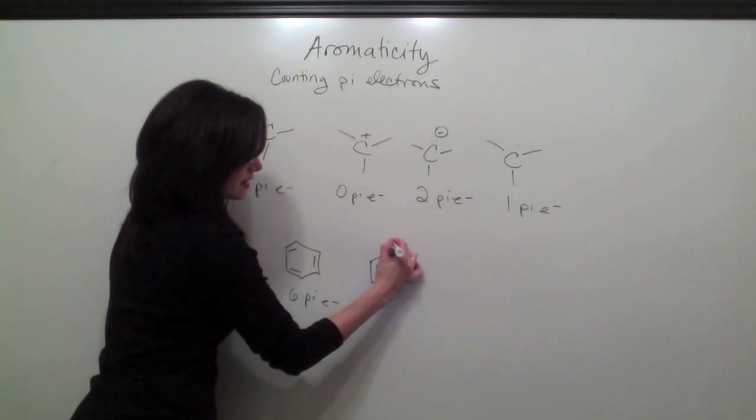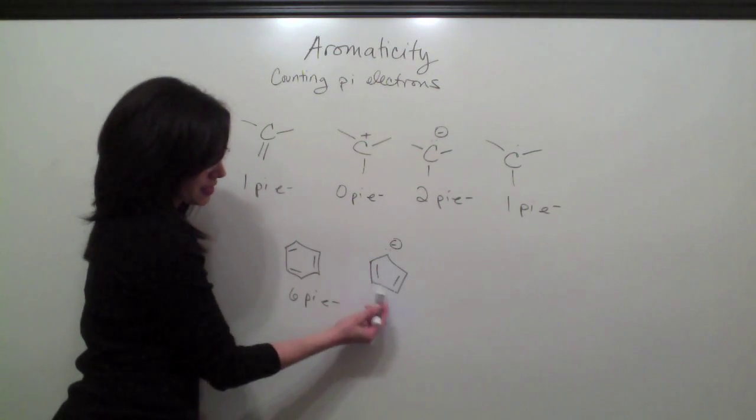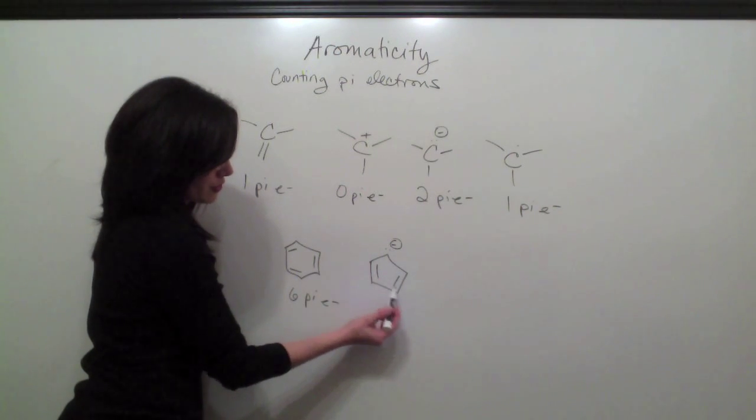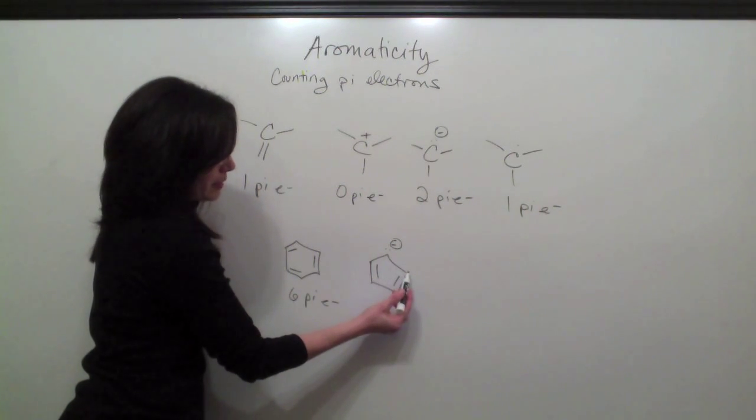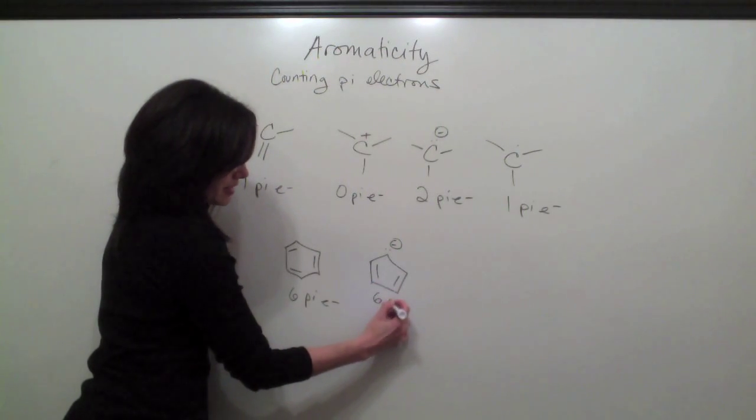Take a look at this guy. These are all sp2. That counts as one, two, three, four. And then here we have a carbanion, five, six. So there's a total of six pi electrons.